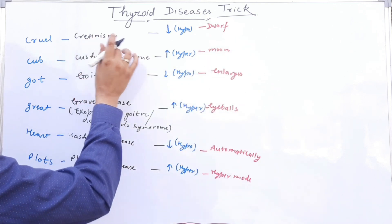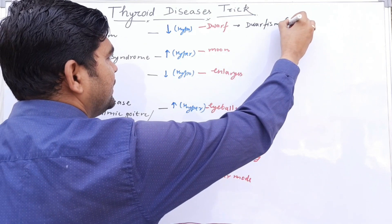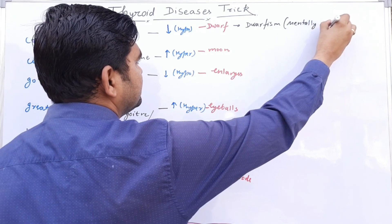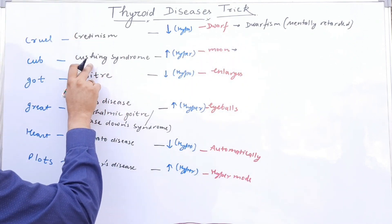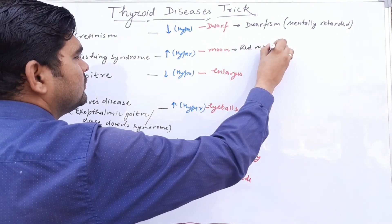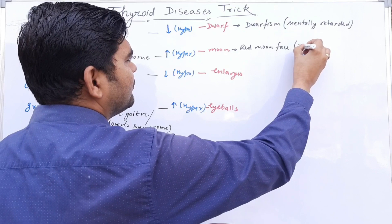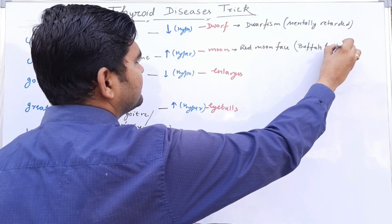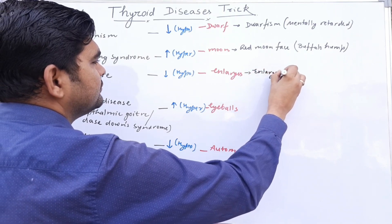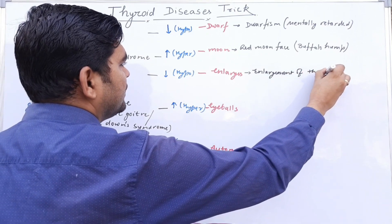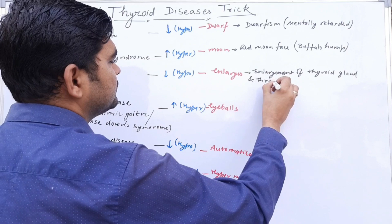The characteristics for Cretinism are Dwarfism and mental retardation. The person suffering from Cushing syndrome has a red moon face and a buffalo hump — a hunchback near the back of the neck. Goiter involves enlargement of the thyroid gland, where the throat swells up.